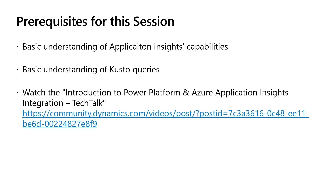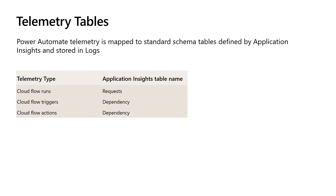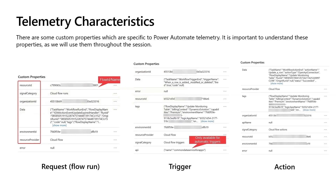There are some prerequisites for this session: you should have a basic understanding of App Insights capabilities and some basic understanding of KQL queries. You should also watch the introduction to Power Platform and Azure Application Insights integration Tech Talk from colleagues Tom and Amira. The Power Automate telemetry is pretty simple — it is mapped to two standard schema tables in App Insights. Cloud flow runs sit in the requests table, and cloud flow triggers and actions sit in the dependency table. There are some custom properties specific to Power Automate telemetry — for flow runs, actions, and triggers.